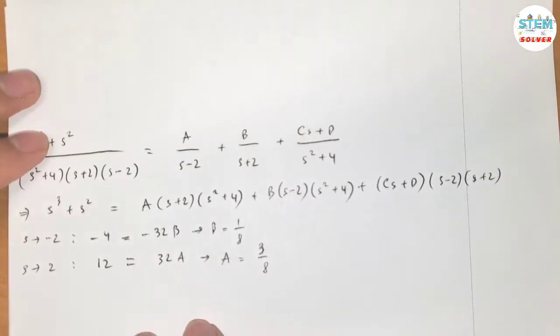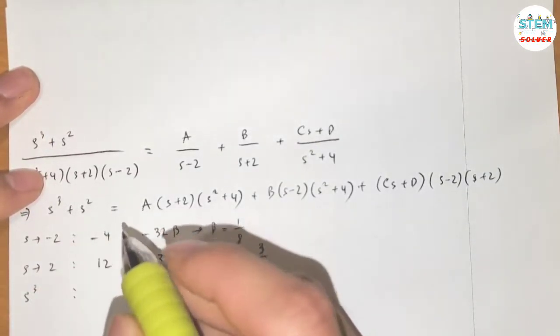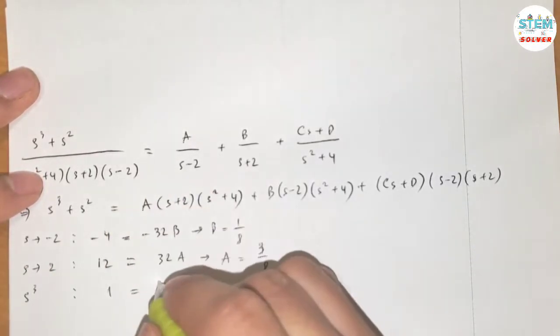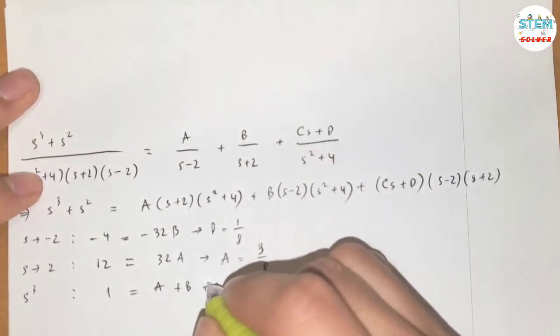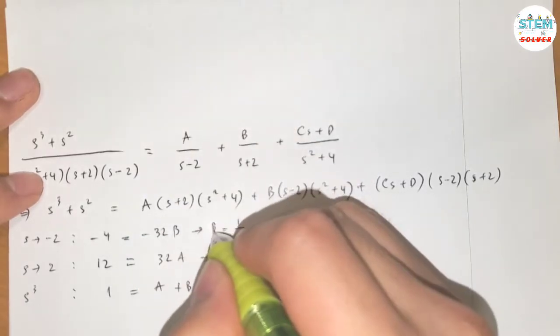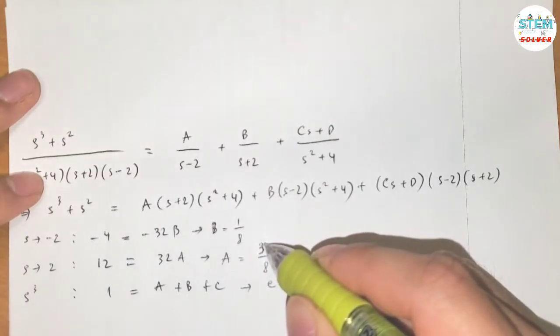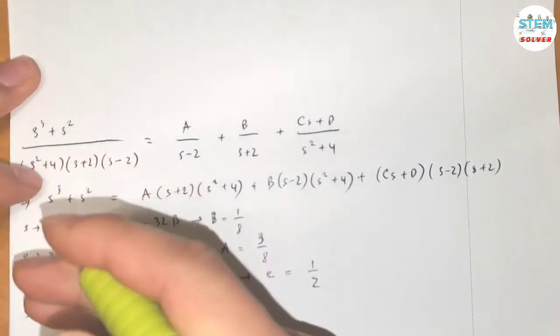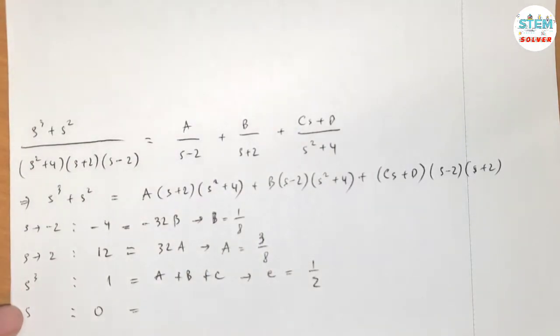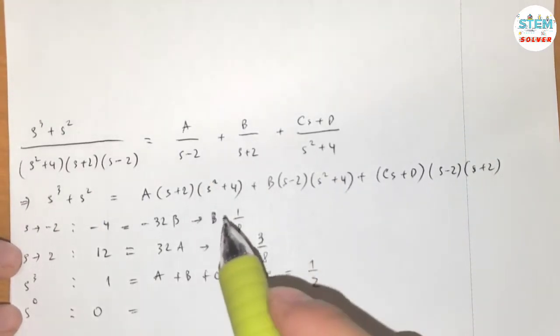Let's test positive 2. On the left side I have 8 plus 4, 12. On the right side it eliminates this and this, so I'm left with this. 2 plus 2, 4. 4 times 8, 32 again. So A equals 3 eighths. 12 divided by 32, divide this by 4, this by 4. Now there's no more time for us to use the limit, so I'm going to fall back to equating coefficients. Let's take a look at the leading coefficient of S cubed, the highest exponent. On the left side I have 1, on the right side I have S times where S cubed, A plus B plus C. So we know A and B, we can find C, which is 1 minus 1 eighth minus 1 eighth equals 1 half.